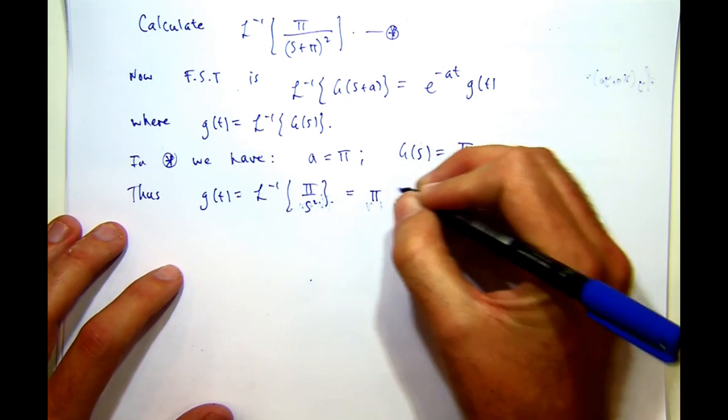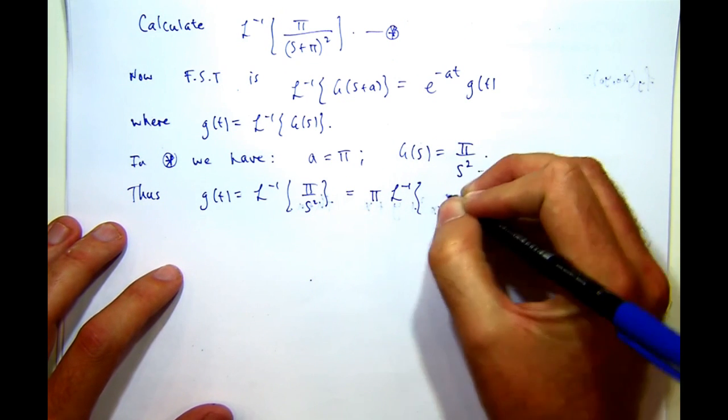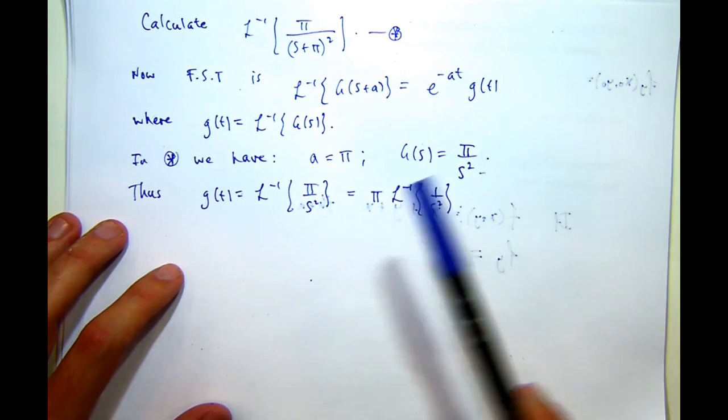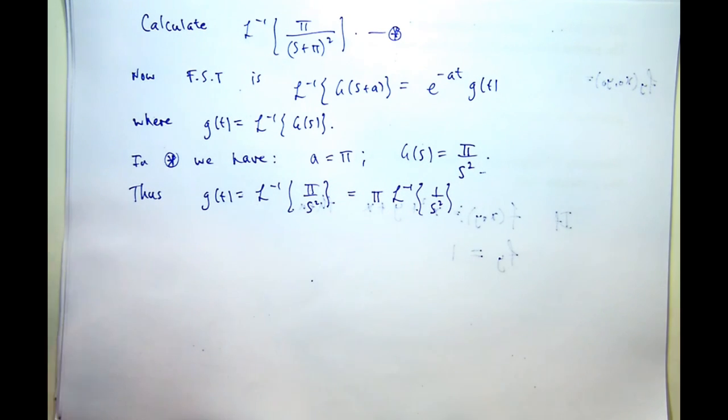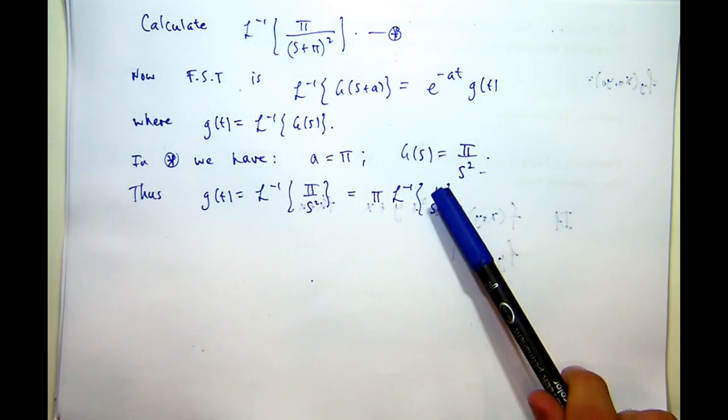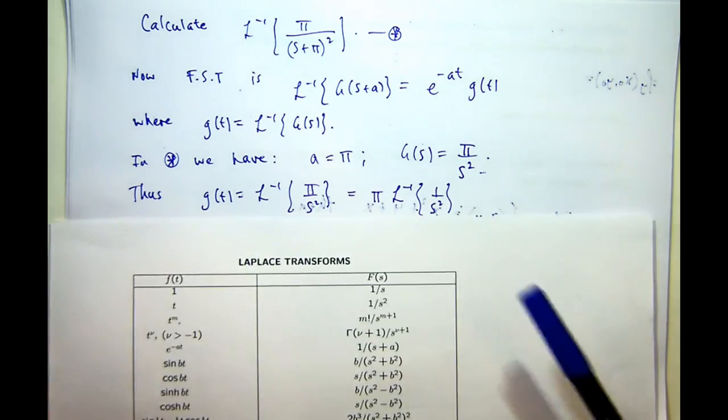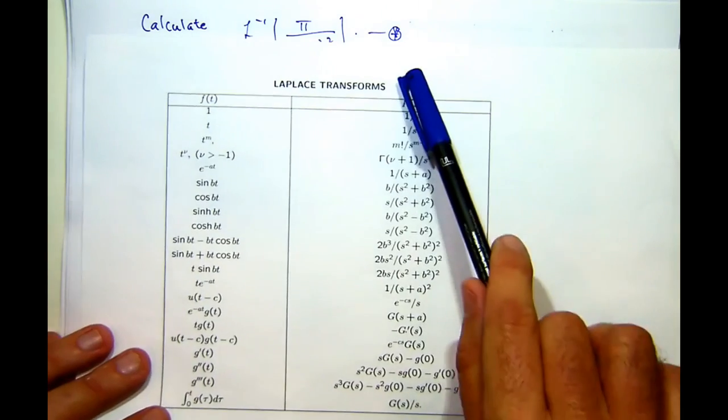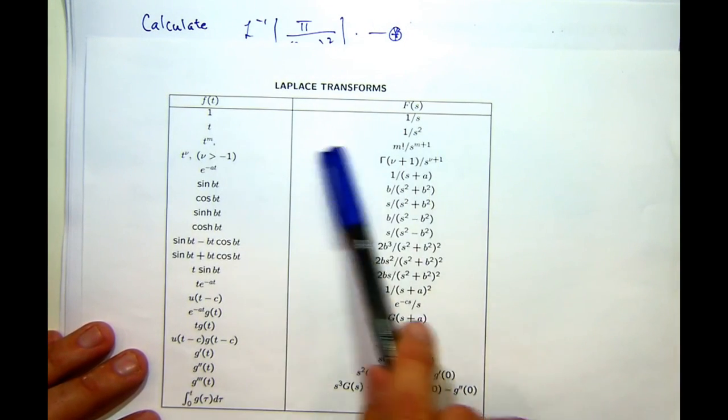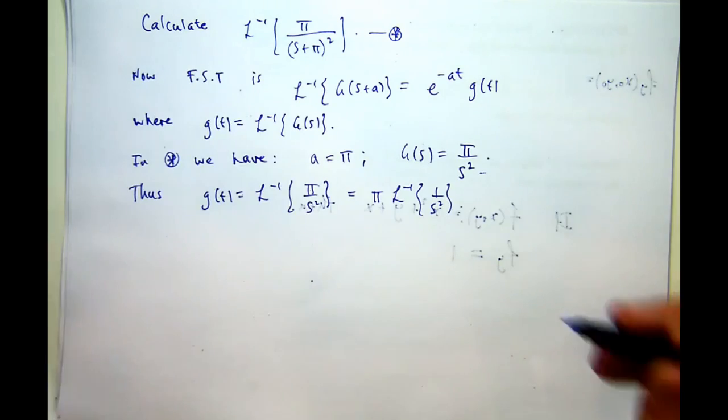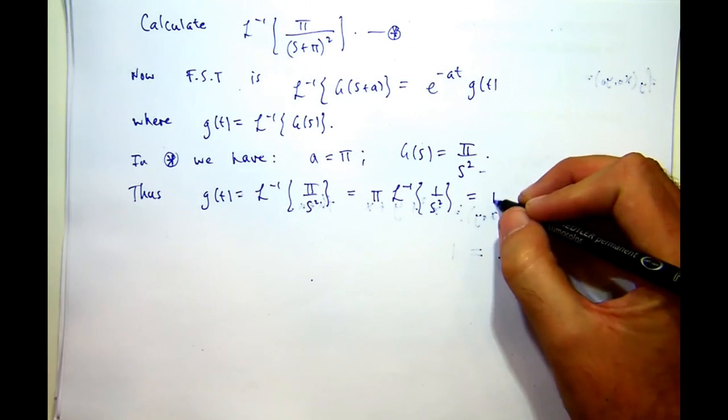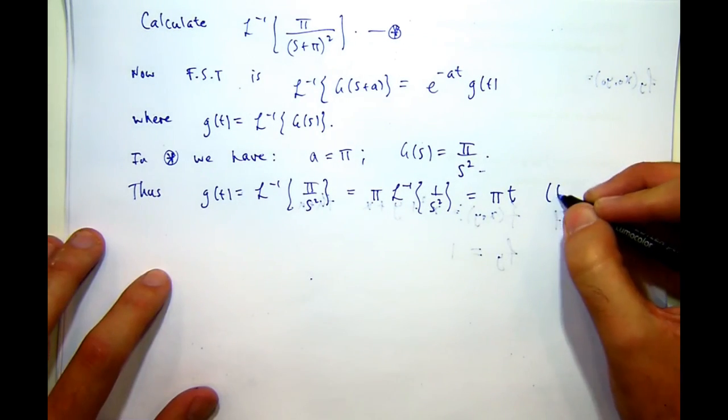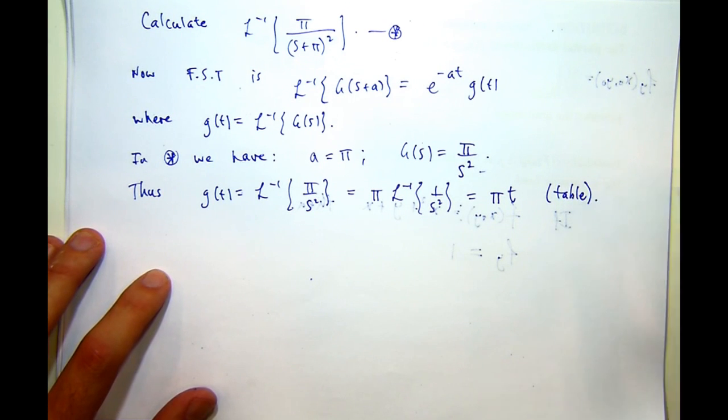Well, because these transforms are linear operators, I can actually break this up into the following. I can bring a constant out the front. So what I would like to do is now look down my table and see, what is the inverse transform of 1 on s²? Well, if I look here, it's in the third line. The inverse transform of 1 on s² is t. So it would be π times t.